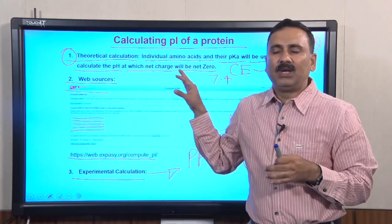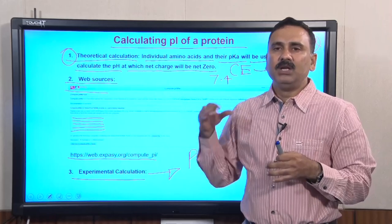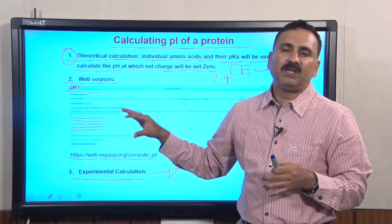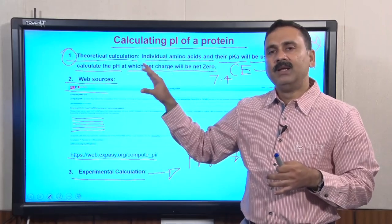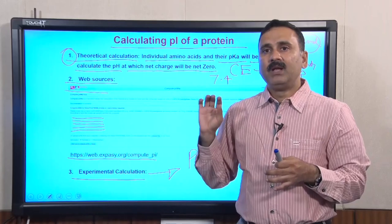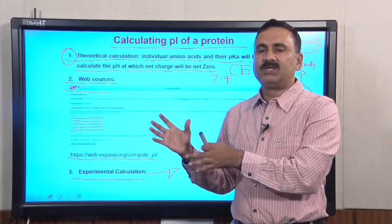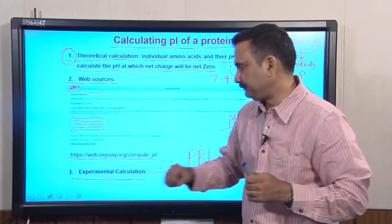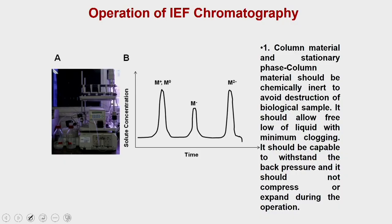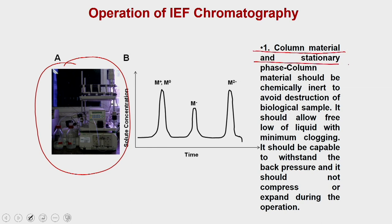Once you have calculated the pI, you can choose the pH at which you would like to run the cation or anion exchange chromatography. Let us discuss how to perform this chromatography for a crude mixture of proteins. First, you prepare your column — the column material should be chemically inert to avoid destruction of biological samples.